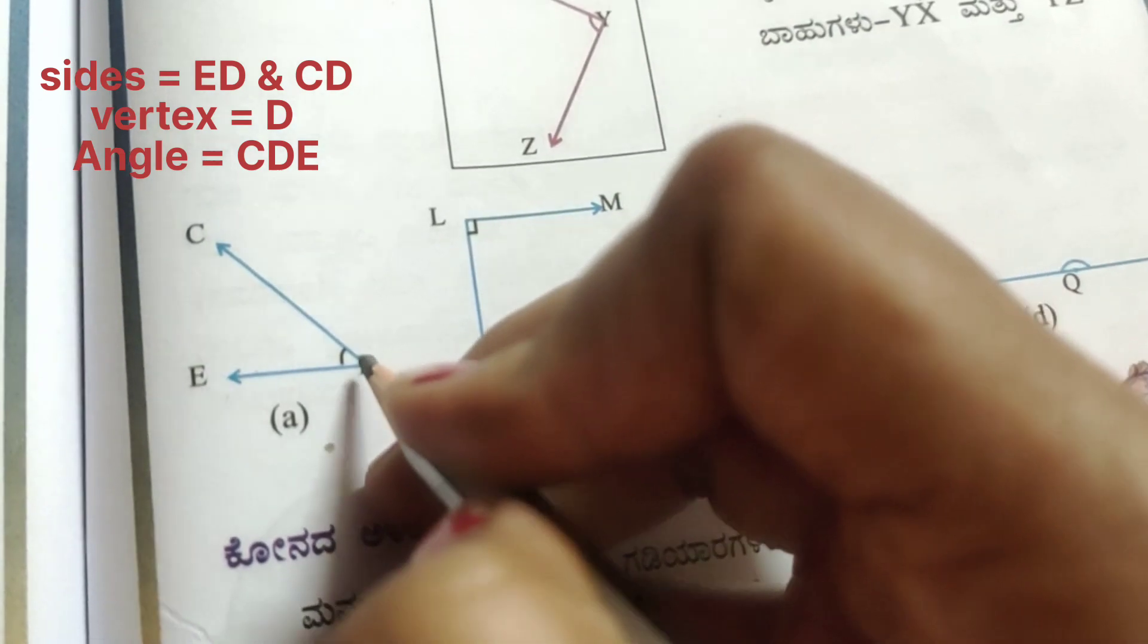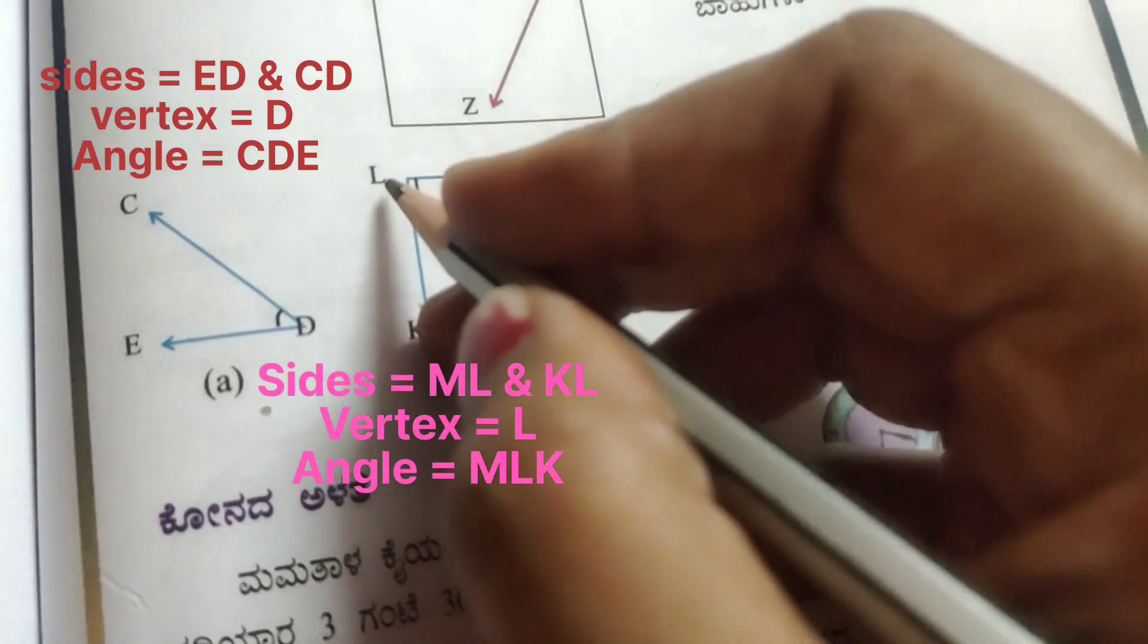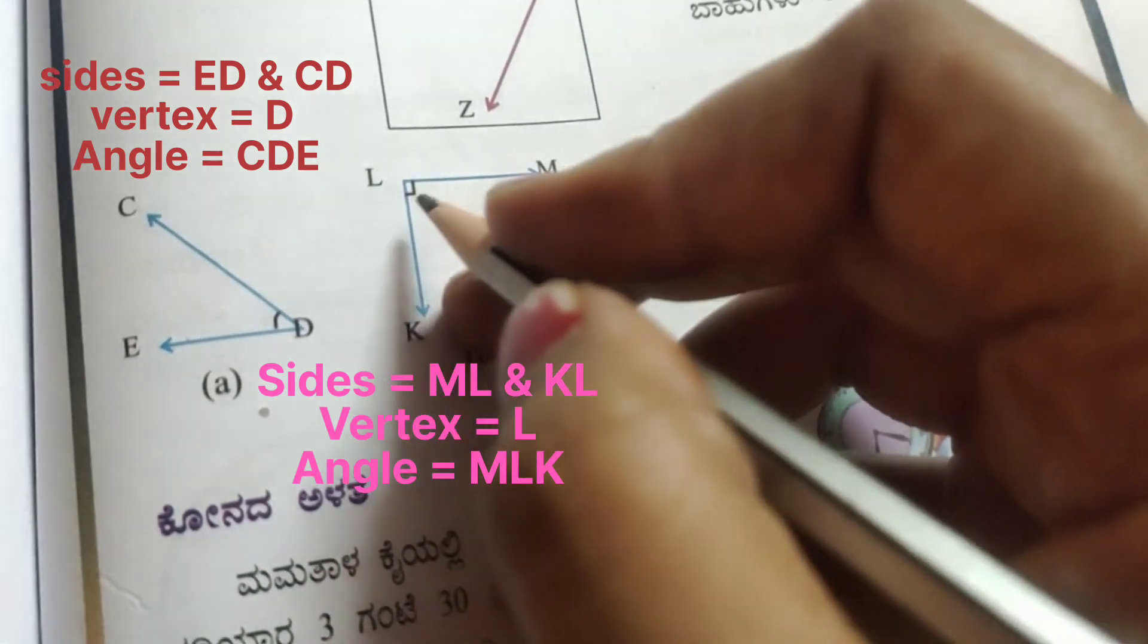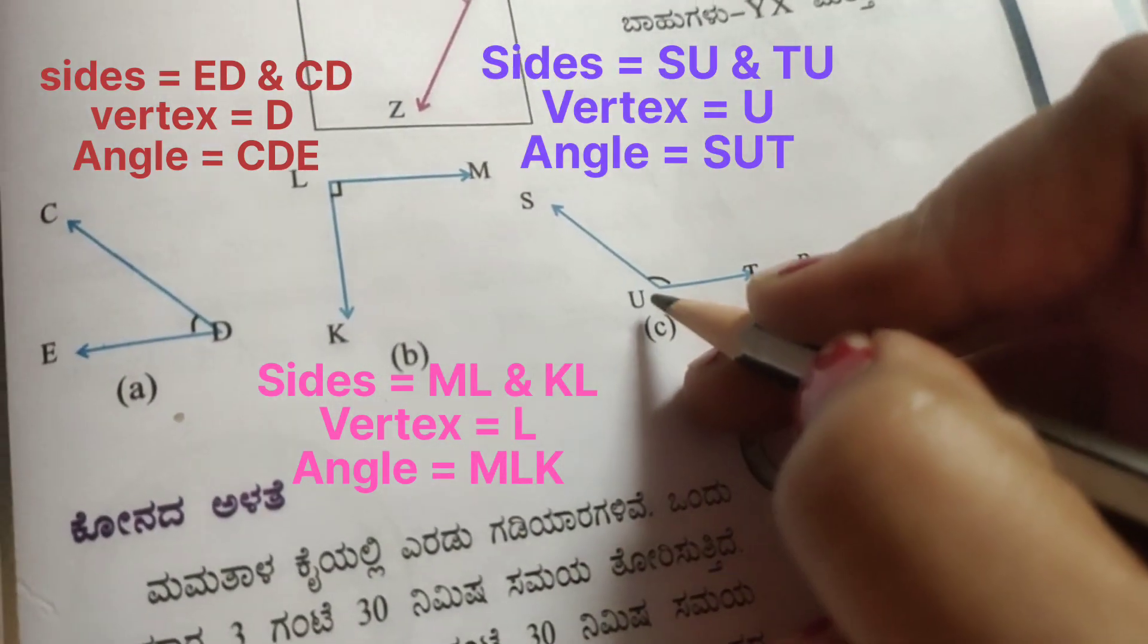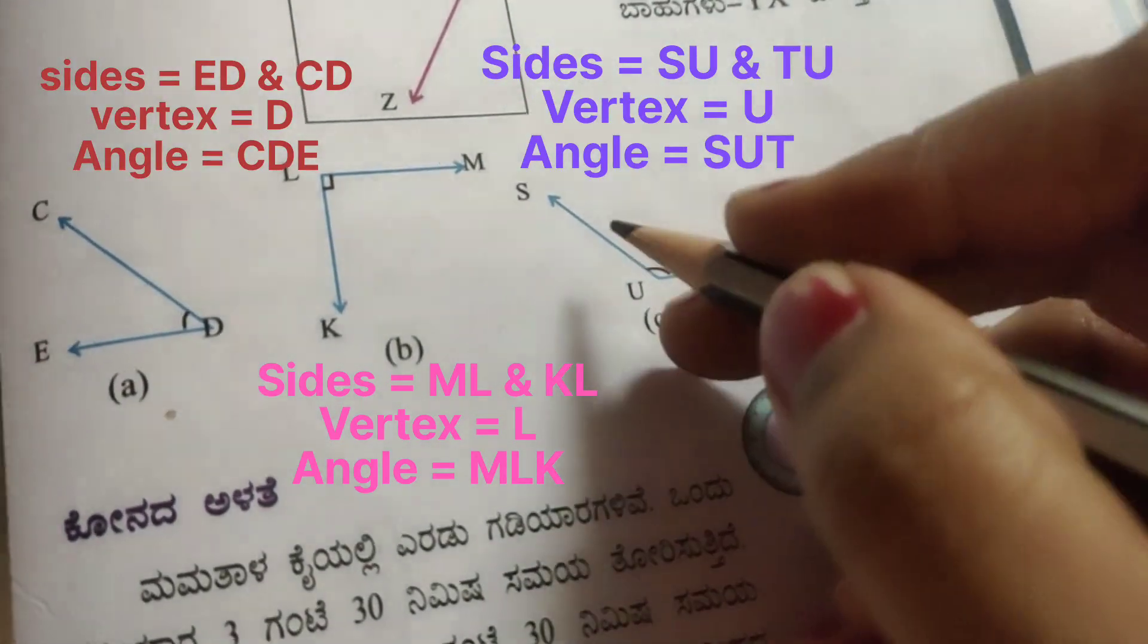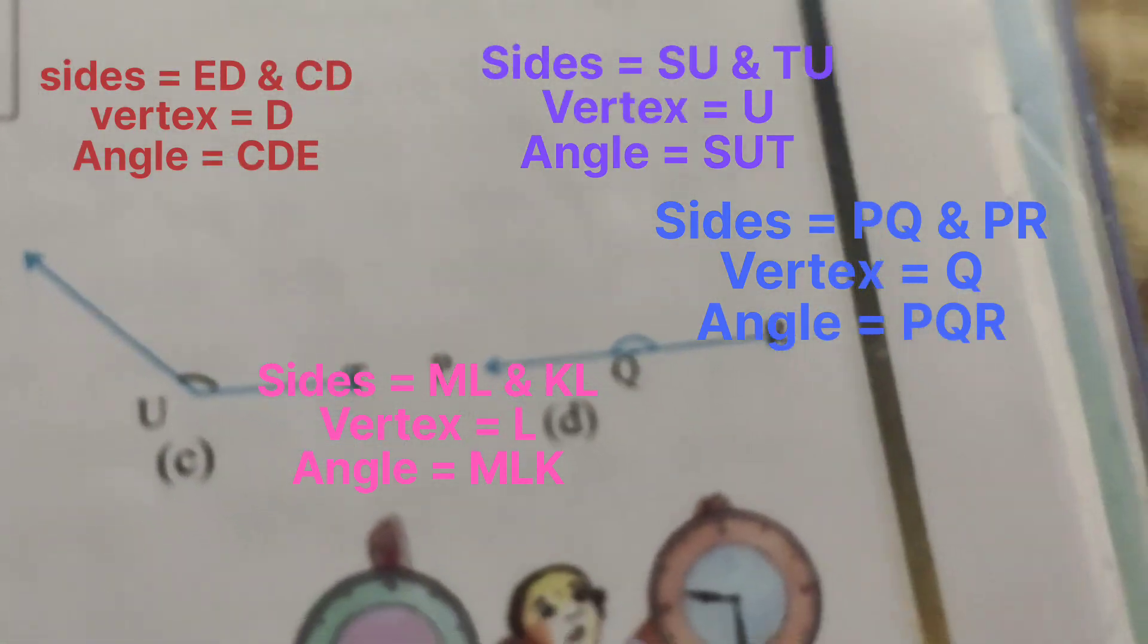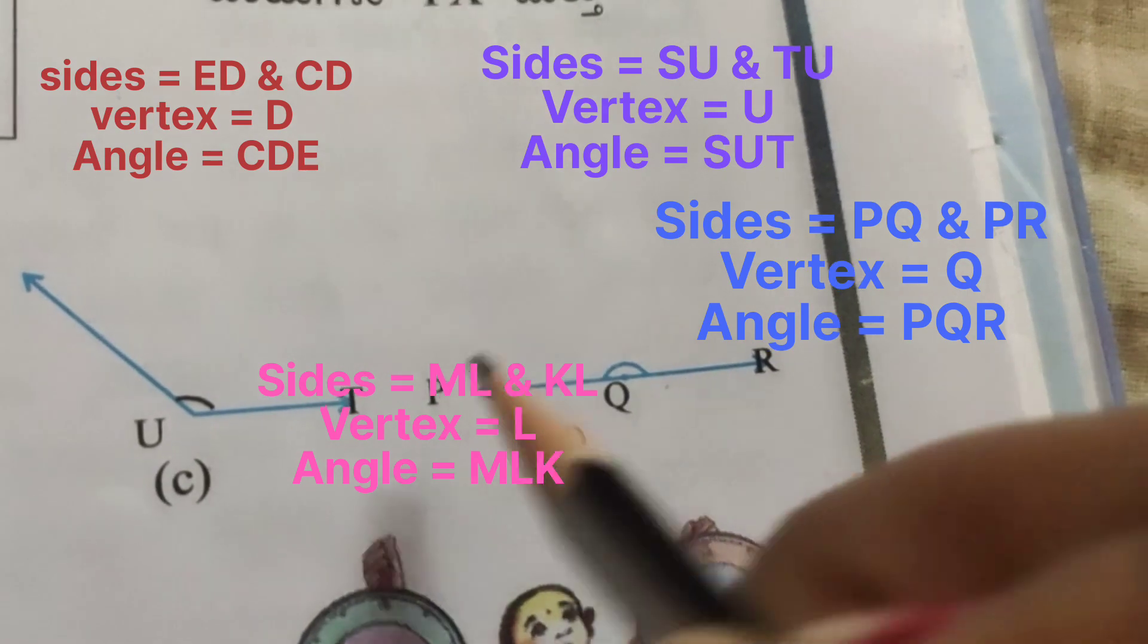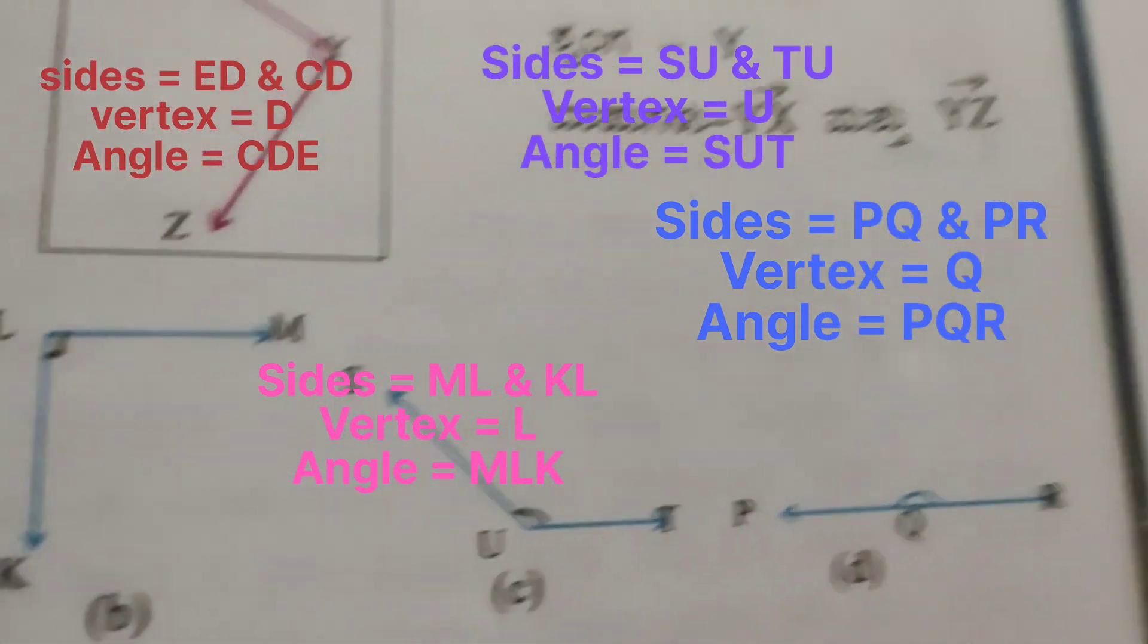The same, SUT. U is the vertex and SU and UT are the sides. Next, PQR. Q is the vertex. PQR is the angle. PQ and QR are the sides.